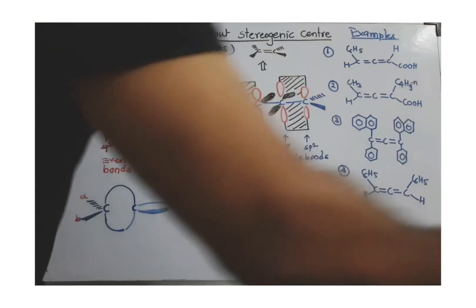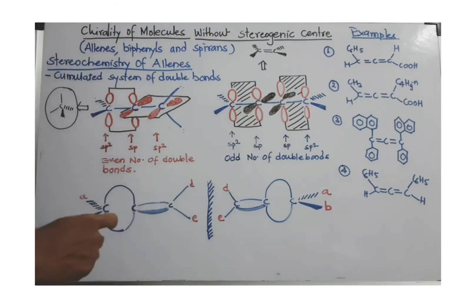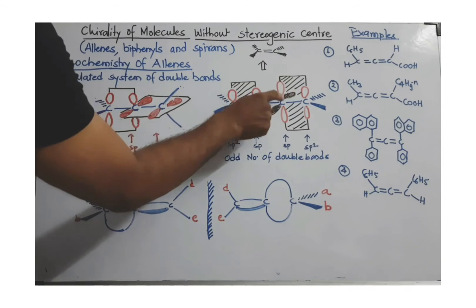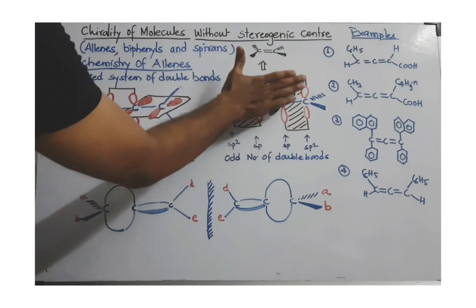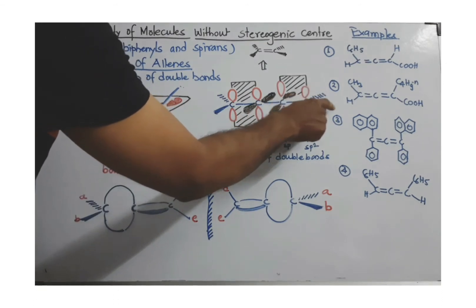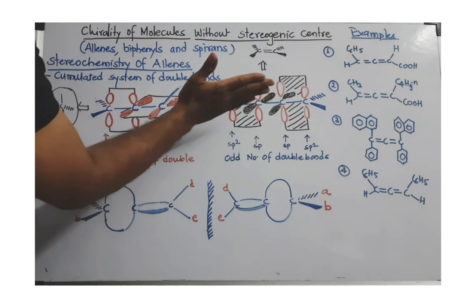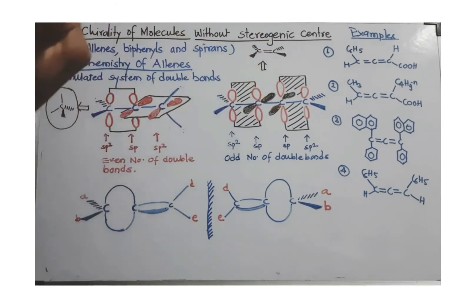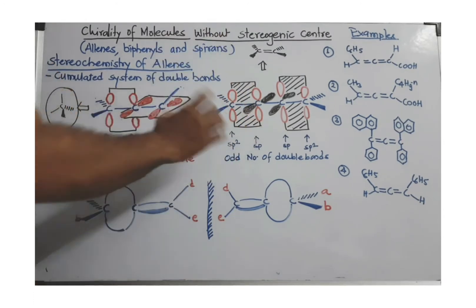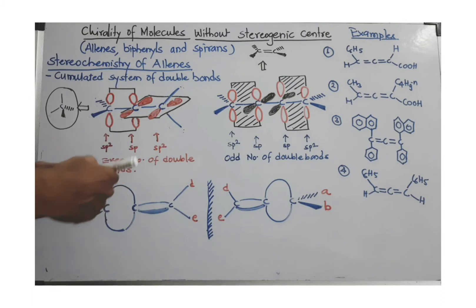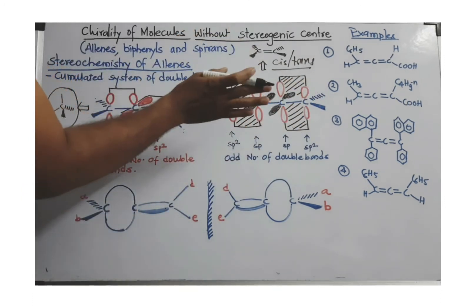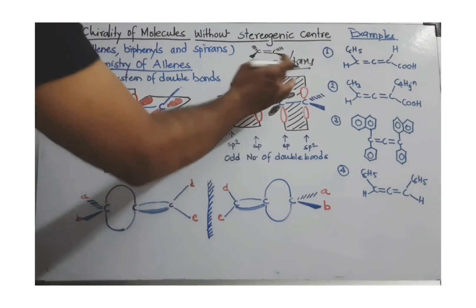Now consider an allene with an odd number of double bonds — one, two, three, or even more. Here you can see that the double bonds between adjacent carbons are in one plane, and two double bonds are perpendicular to each other. The groups at the terminal carbons are either behind the plane or above the plane, just like in an alkene. So an allene or cumulene with an odd number of double bonds cannot show optical activity — it can show geometrical isomerism, meaning cis and trans isomerism, where similar groups on the same side is cis and on opposite sides is trans.